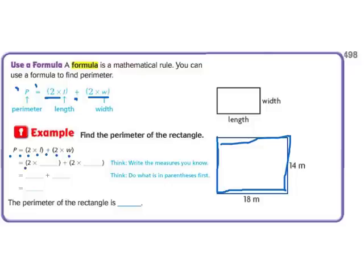So perimeter equals 2 times the length plus 2 times the width. So we're going to do 2 times, and we're going to look at the length. It is 18, so we'll put an 18 in here. And 2 times the width is 14, so we'll put a 14 in here. And then we just actually do the math. 2 times 18 is 36.